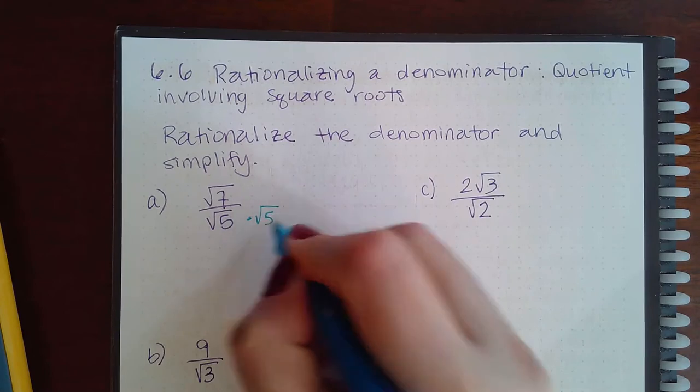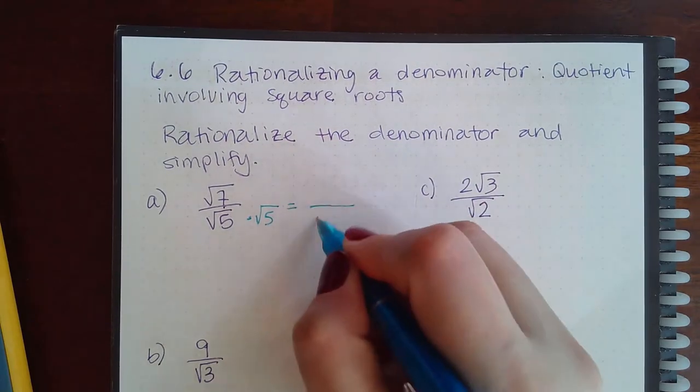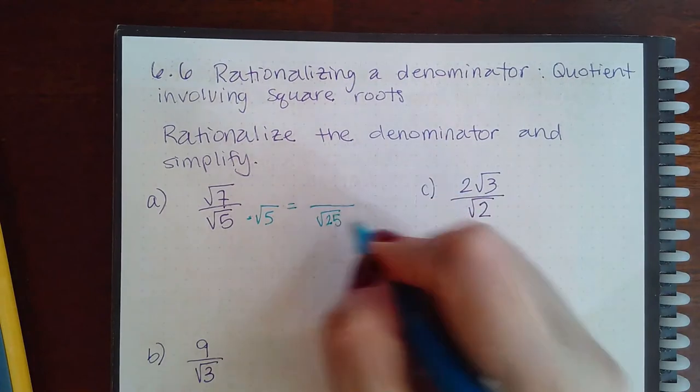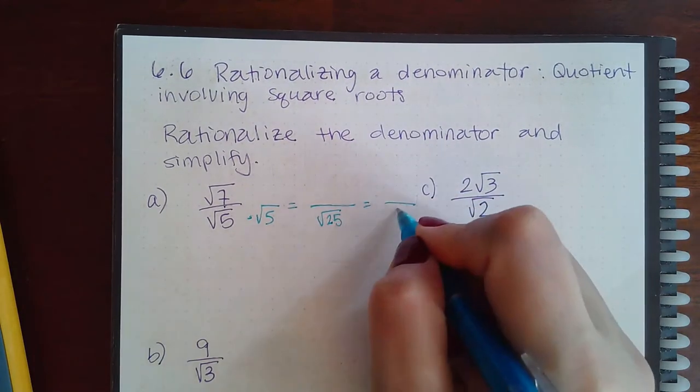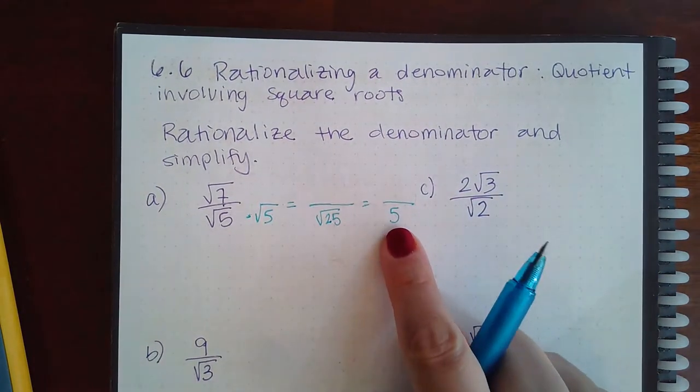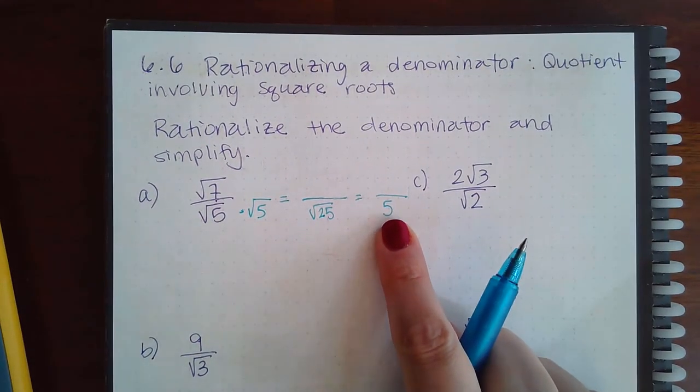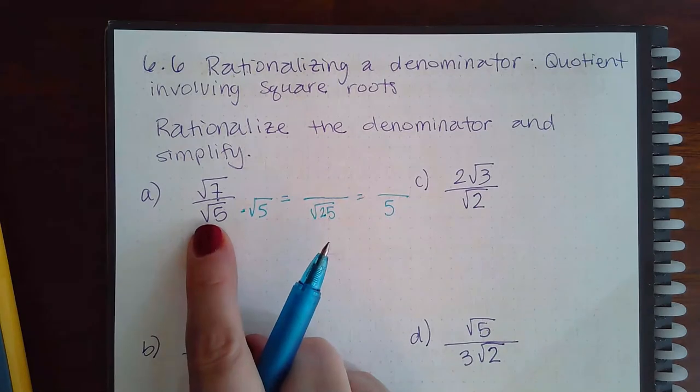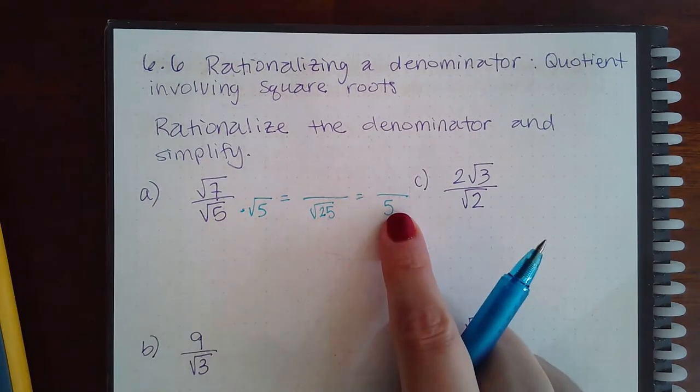Then I would get the square root of 5 squared or the square root of 25, and the square root of 25 is just 5, and then no more house in the denominator anymore. That's the goal. You want this square root to be gone in the problem.